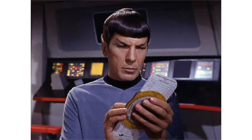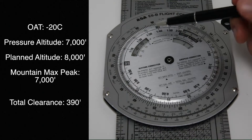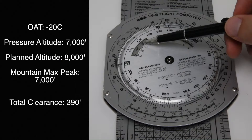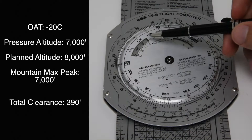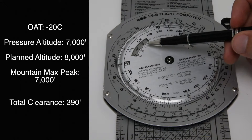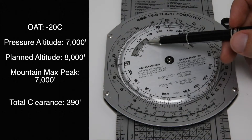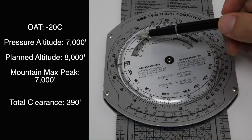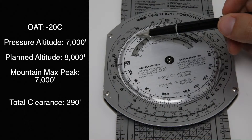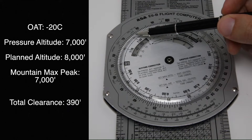So how do we calculate true altitude? For this example we have an outside air temperature of negative 20 degrees and we set that on this window. Then we have a pressure altitude of 7,000 feet, which we calculated by setting the altimeter to 29.92. Once that's set we go to the inner scale and look for our planned altitude, which is 8,000 feet. We want to choose 8,000 feet because we want to clear that mountain by 1,000 feet. The max peak on the mountain is 7,000 feet — that's 1,000 feet of separation.